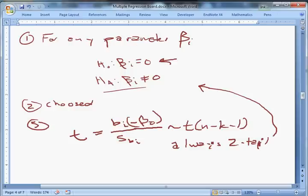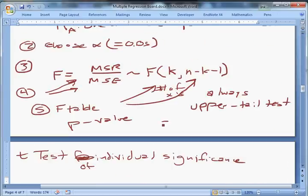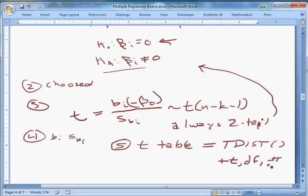You can do k plus one of these, and every piece of Excel output will have k plus one of these. Step four: you'll get bi and s sub bi, which is the standard error, from your output. Then step five: you'll use your t-table, or again you can use equals T.DIST in Excel. I think for the F-test it's F.DIST. For T.DIST, what you need is your positive value of t first, then your degrees of freedom—it won't take a negative value—and then the number of tails. I forget what it is for F.DIST, but Excel has pretty good tool tips to walk you through that.